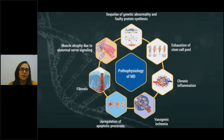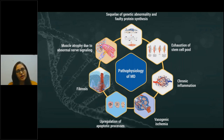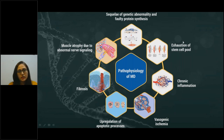Apart from stem cell exhaustion, there are multiple other pathophysiological mechanisms. The primary reason is a faulty gene leading to faulty dystrophin protein, causing muscle cells to be very fragile and break under normal day-to-day stresses, resulting in progressive weakness. Along with this, chronic inflammation plays a role. The genetic abnormality, exhaustion of stem cells, and chronic inflammation are all contributing factors.